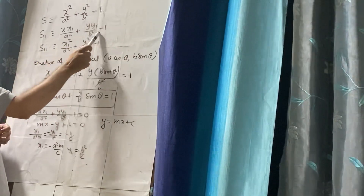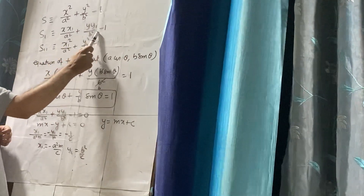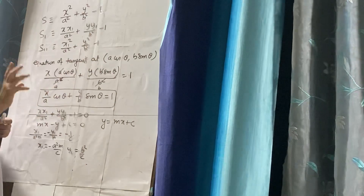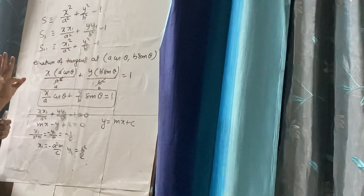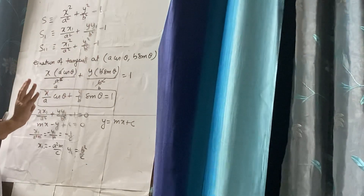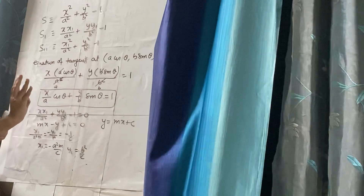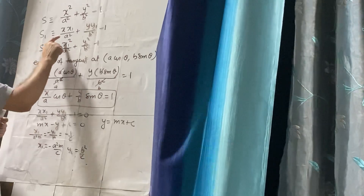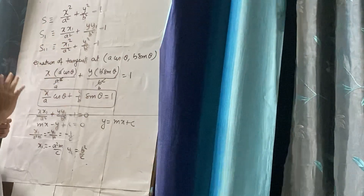When S1 equals 0, it represents three things. It represents the tangent, chord of contact, and polar. All three of these will be given by S1 equals 0.